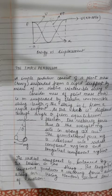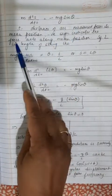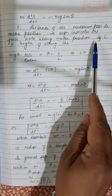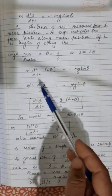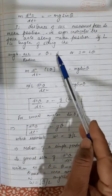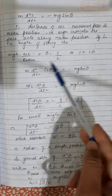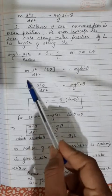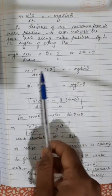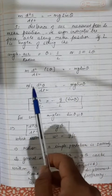Applying Newton's second law: m(d²s/dt²) = −mg sinθ, where s is the arc distance from the mean position. The negative sign indicates the force acts towards the mean position. Since θ = s/l (arc over radius), we have s = lθ. Substituting into the equation: ml(d²θ/dt²) = −mg sinθ, so d²θ/dt² = −(g/l) sinθ.